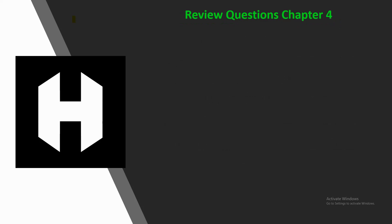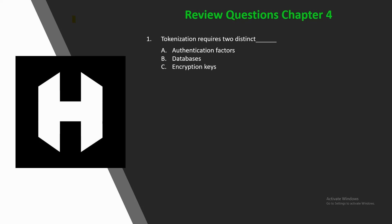Question 1: Tokenization requires two distinct — A) authentication factors, B) databases, C) encryption keys, or D) personnel? The answer is B, databases. In order to implement tokenization there need to be two distinct databases: one containing the raw original data and the other containing the tokens.